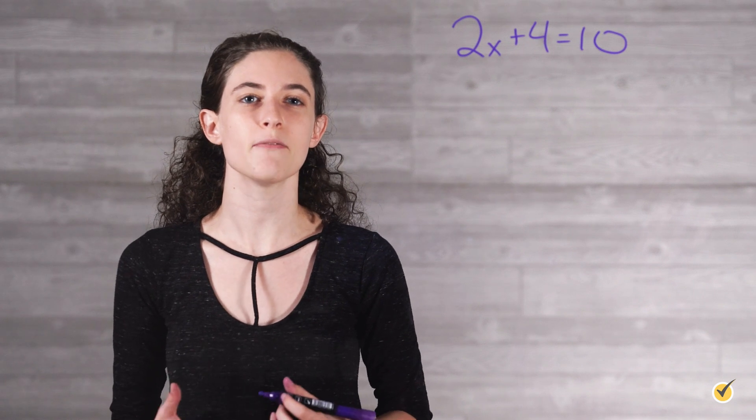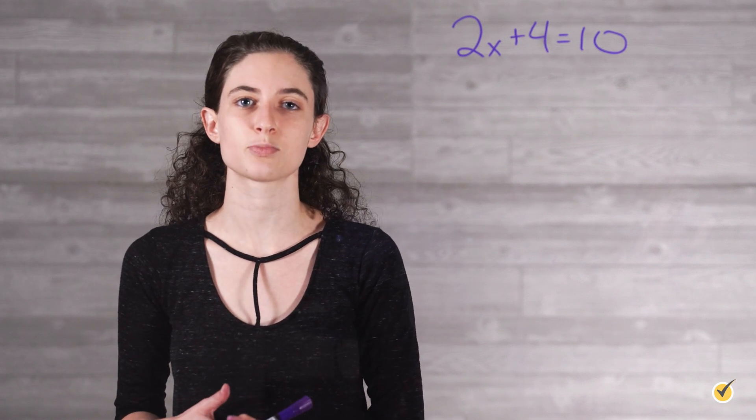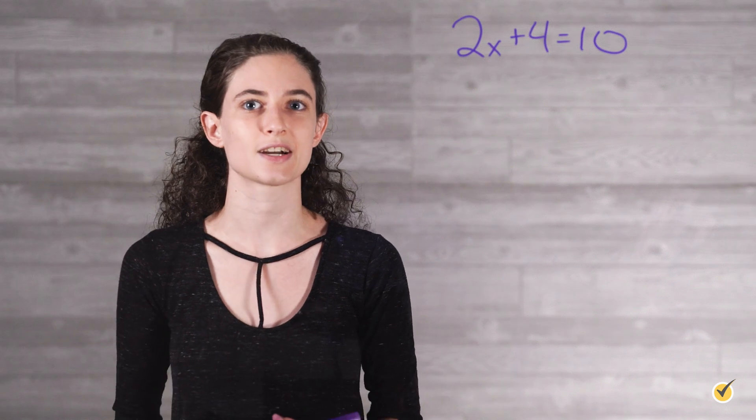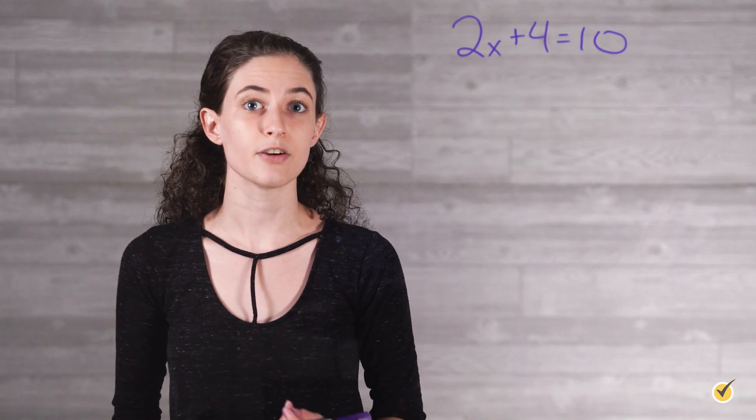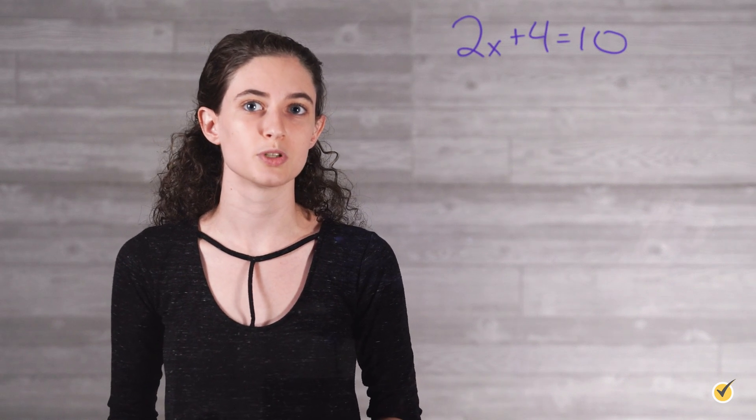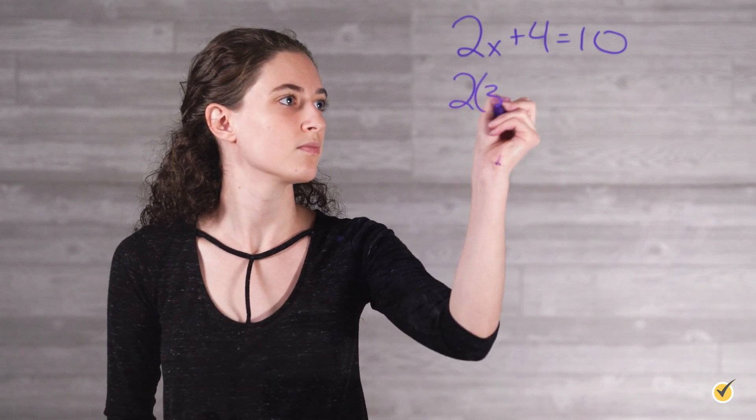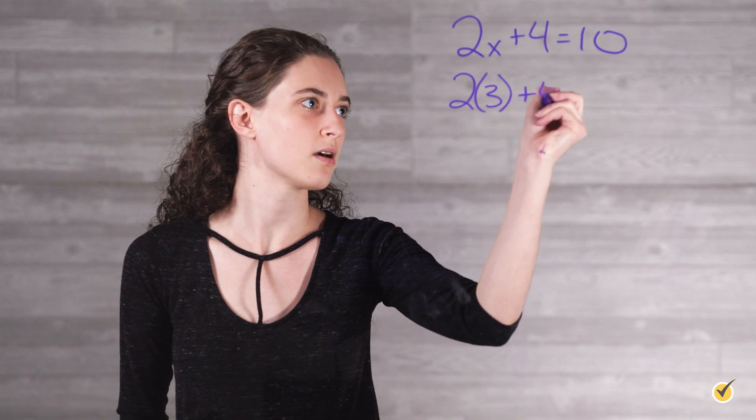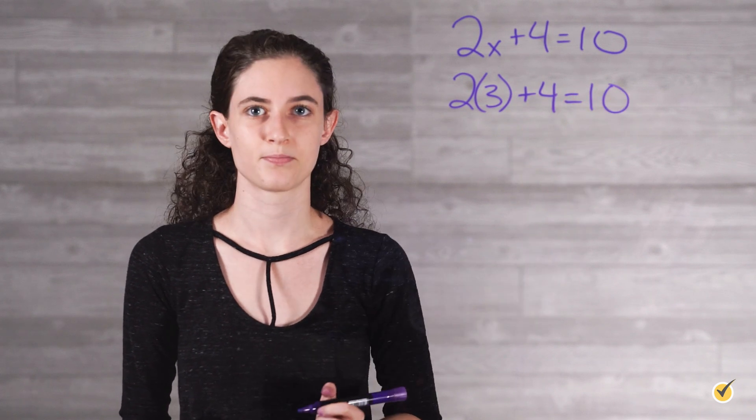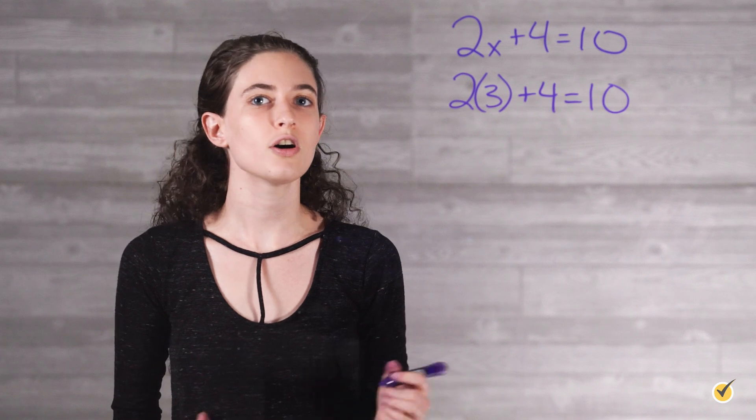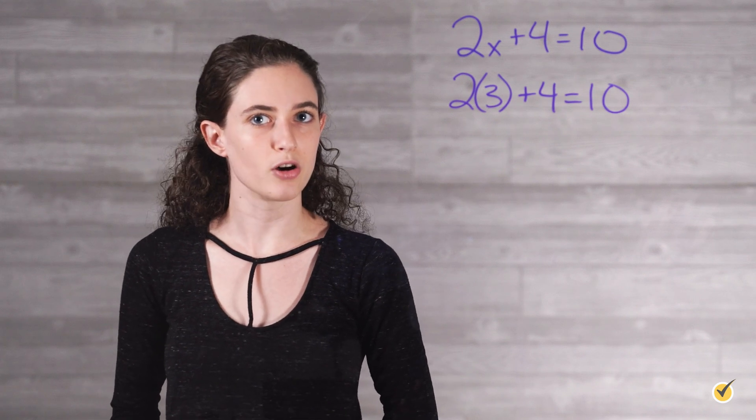It also tells us that there's some value of x that will make the expression 2x plus 4 actually equal 10, and therefore make the statement true, which in this case x would be 3. 2 times 3 plus 4 equals 10. All other values of x make the statement false.